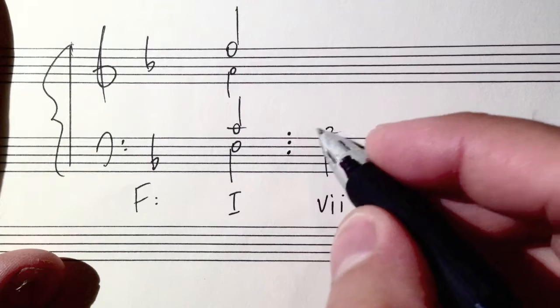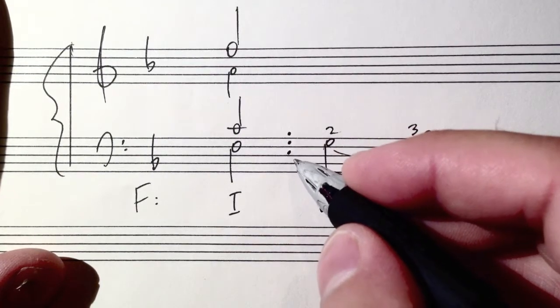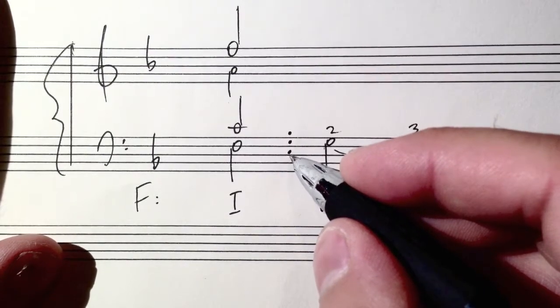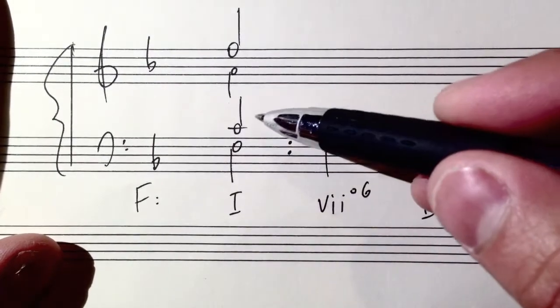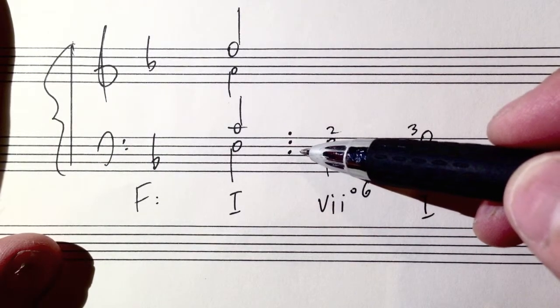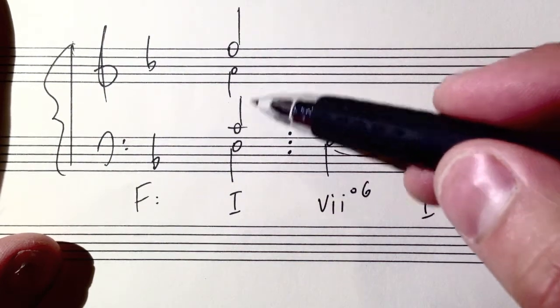Okay, so now we've exhausted the use of the G. We need definitely the leading tone, scale degree seven. So where can we put scale degree seven? Either the tenor, the alto, or the soprano. We need an E natural.